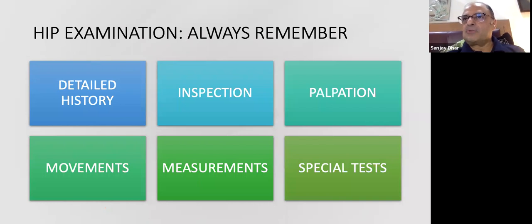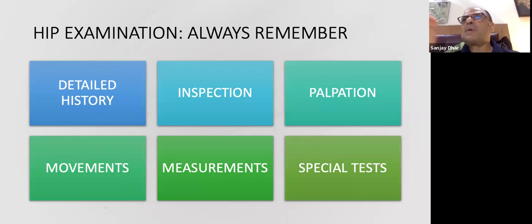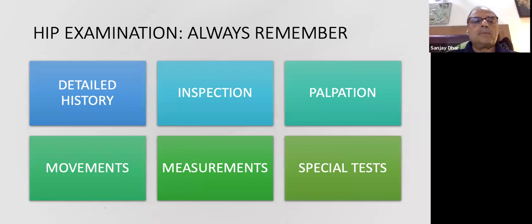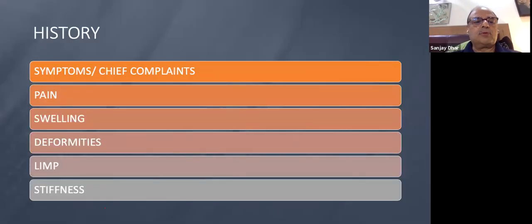If you ask history and ask relevant points, keep presenting them at different points so the examiner gets convinced. Have a plan when asking history — don't randomly jump from fever to 'did you fall last year?' The chief complaint decides your history-taking direction. Like a flow chart, you go: ask this, ask that. That will make your life very easy.